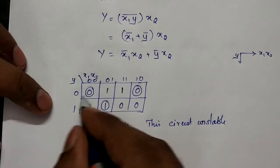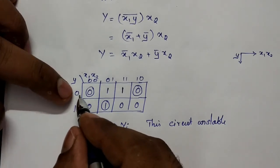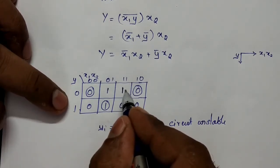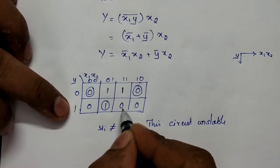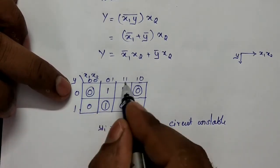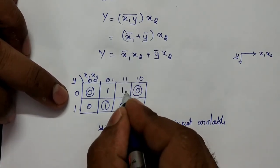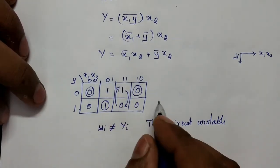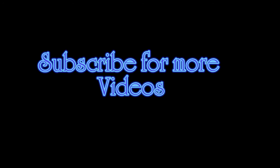Consider input condition 1,1 with present state 0: the next state is 1, which is not stable. That 1 becomes the present state, and with input 1,1 the next state becomes 0. Then 0 becomes the present state again, and it goes back to next state 1. The circuit keeps toggling between 0 and 1 and never stabilizes, making the system unstable.